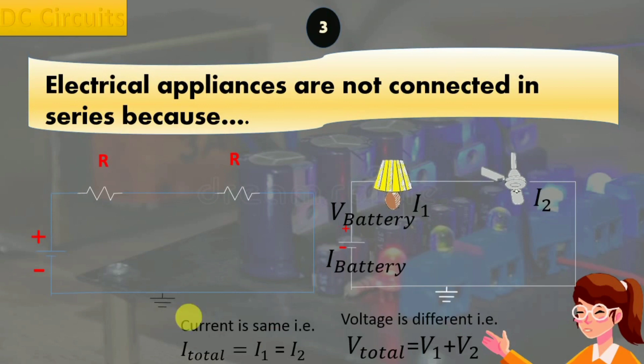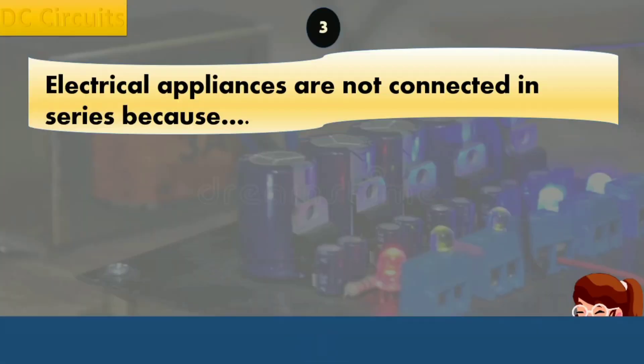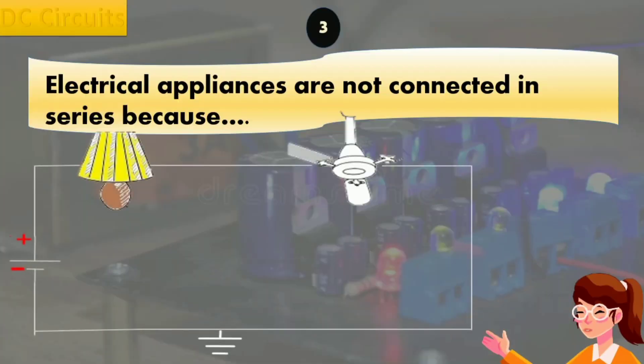Electrical appliances are not connected in series since the current is same through all the connected devices and voltage drop across each appliance is different. There are three reasons for not using series circuits in home appliances.